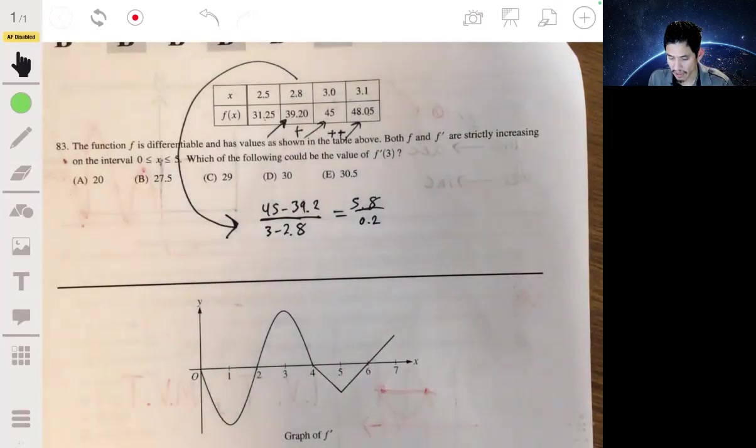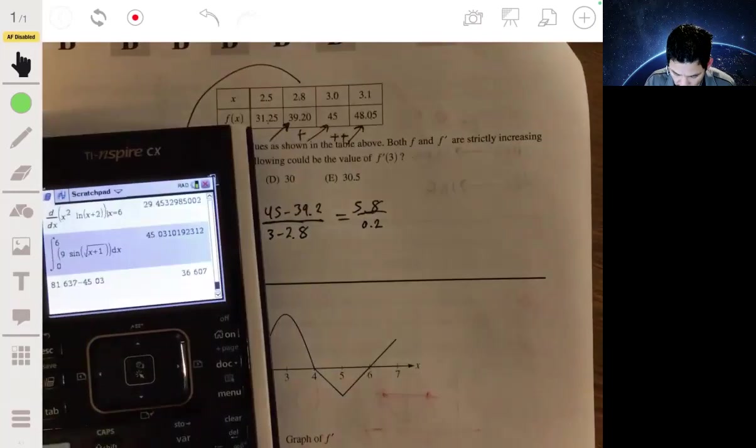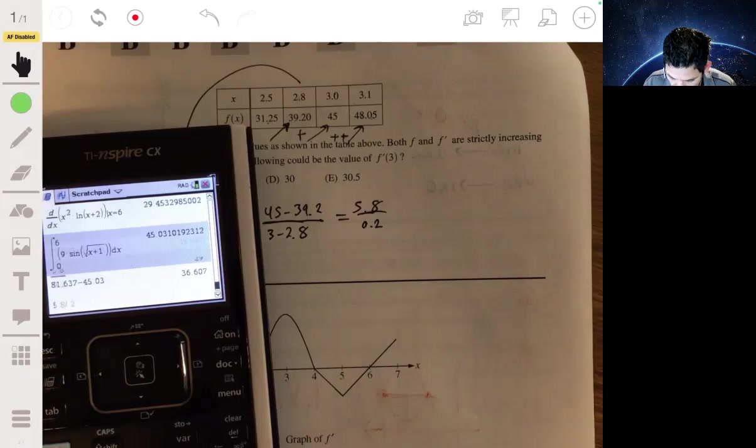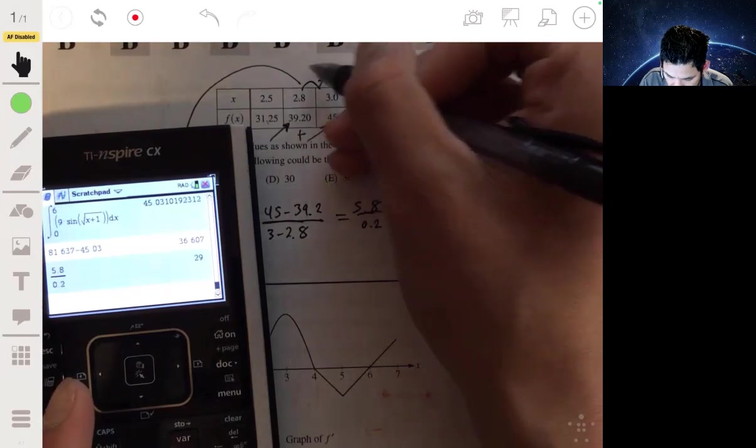Let's use the calculator. 5.8 divided by 0.2, you get 29. So the slope here is 29.